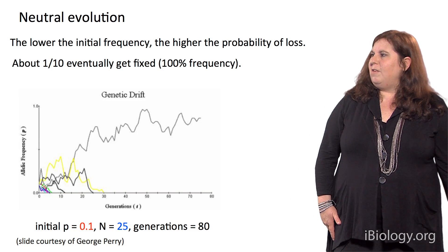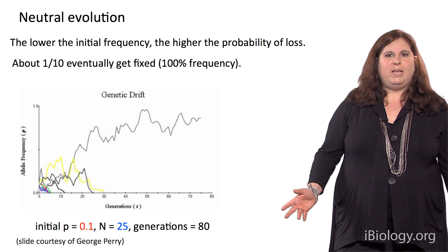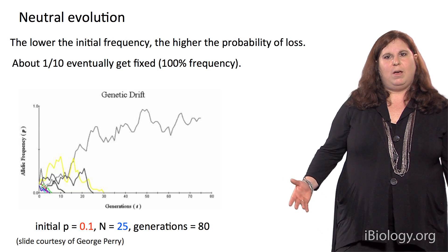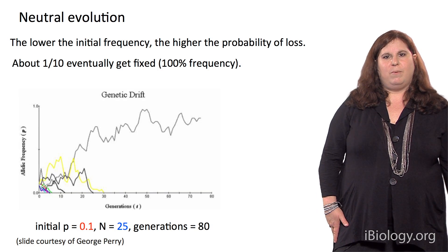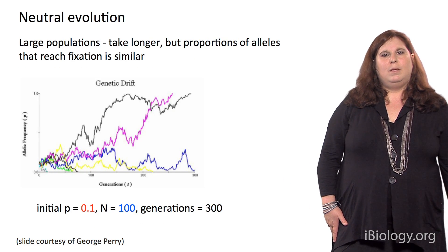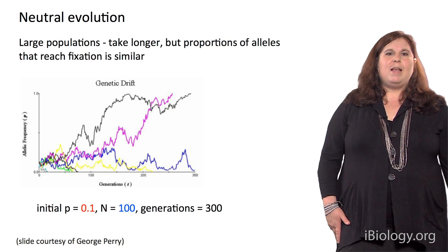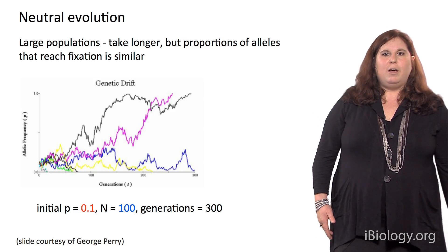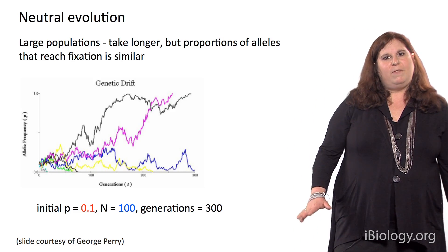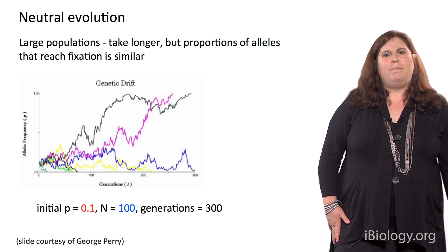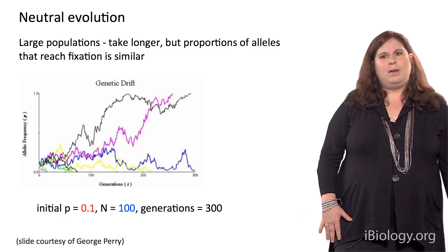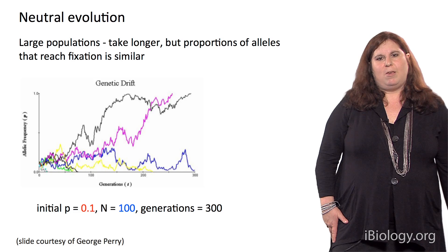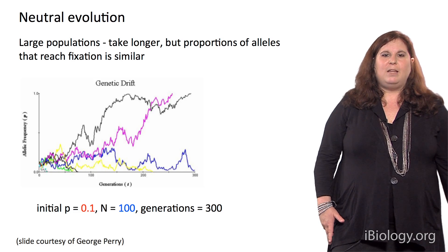In a large population, it takes longer for fixation to occur, but the proportion of alleles that fix is roughly the same — about 1 out of 10 will go to fixation, it just takes longer.